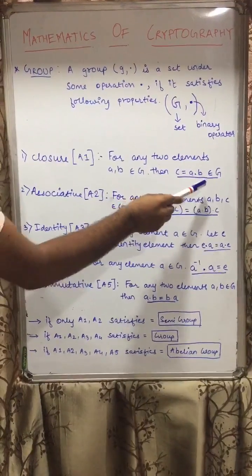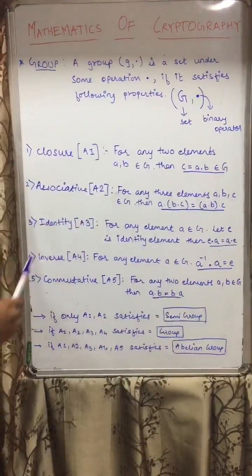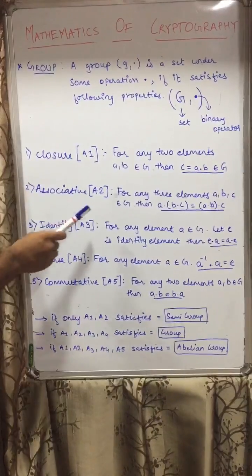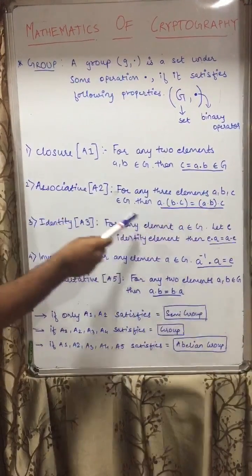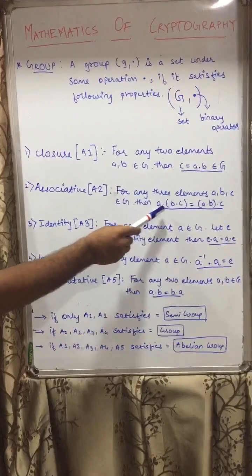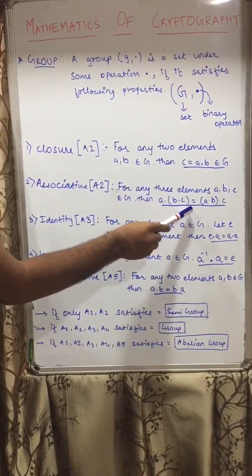Now the next property is associative property A2. For any three elements a, b, and c which belongs to G, then (a · b) · c must be equal to a · (b · c).